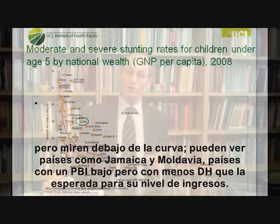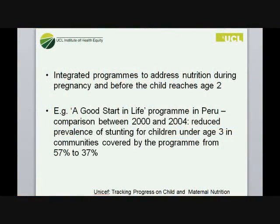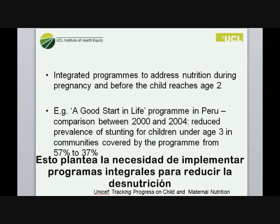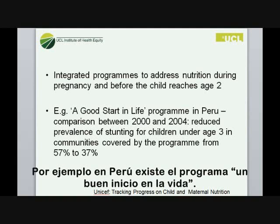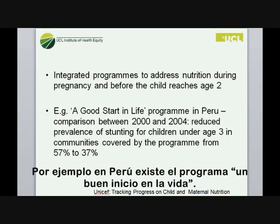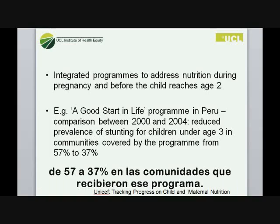This suggests potentially two routes to deal with malnutrition: one is to reduce poverty, and the other is to look at the links between poverty and poor growth of children and try to interrupt those. That means having integrated programs to address nutrition during pregnancy and in early childhood. For example, the Good Start in Life program in Peru reduced the prevalence of stunting for children under age three in communities covered by the program from 57% to 37%.